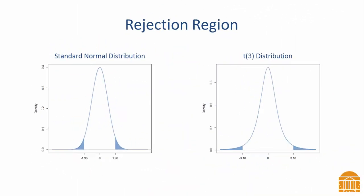A consequence of having more area in the tails of the distribution is that for small degrees of freedom, more extreme values are needed to reject the null hypothesis. The figure on the left shows a standard normal distribution with the extreme 5% of the area shaded in blue. Notice that this region applies to values of 1.96 or more extreme.